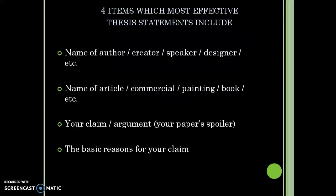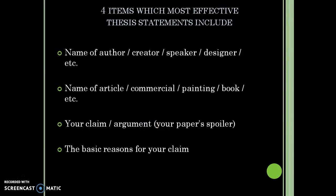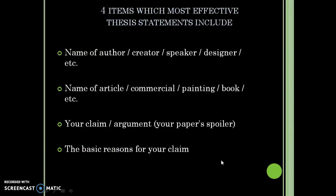There are four things to include in your thesis statements: the name of the movie poster, the movie or the author/creator — so the producer and the movie name — your claim or argument for the paper (is it effective, ineffective, or both?), and the basic reasons for your claim, which are going to be the nine elements. You should not put all nine in. You must include something from visual, something from context, and then choose three to five others of the nine, because the paper's not long enough to include all of them.